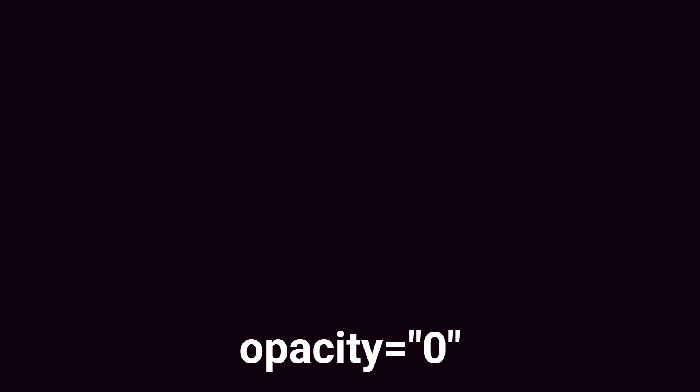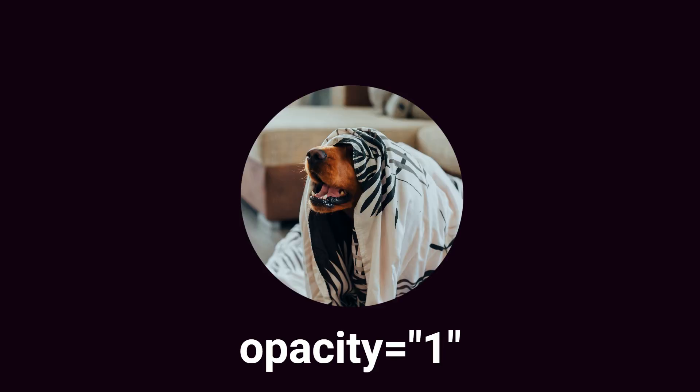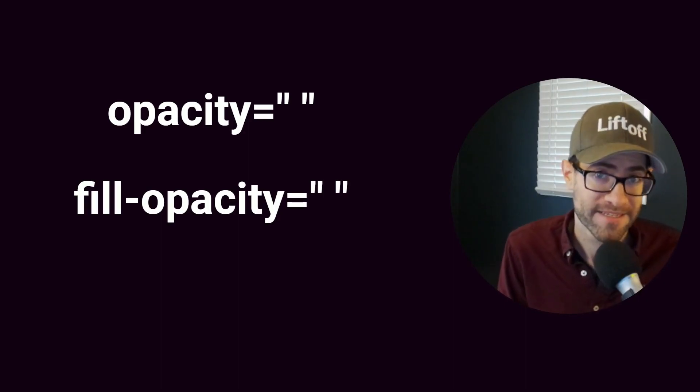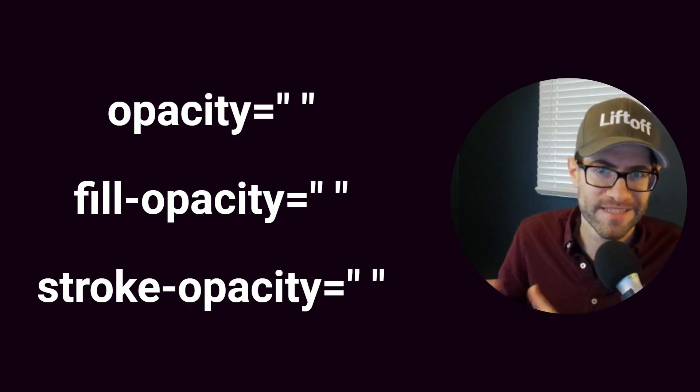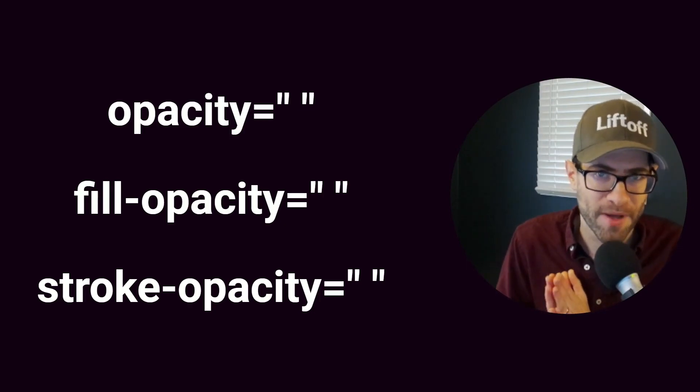Opacity is a numeric value that determines how visible or transparent an element appears. This value can be a number from zero to one, where the lower the number, the more see-through the element appears. A value of zero will make it completely invisible, and a value of one makes the shape completely visible. There are three relevant opacity attributes: opacity, fill-opacity, and stroke-opacity. There's also stop-opacity, which is related to gradients, but we're just going to talk about those first three.